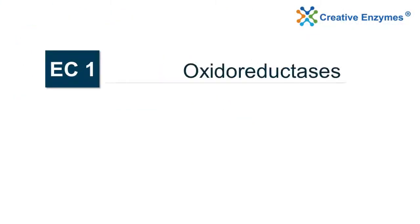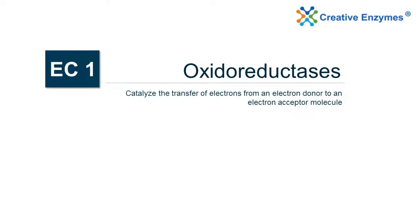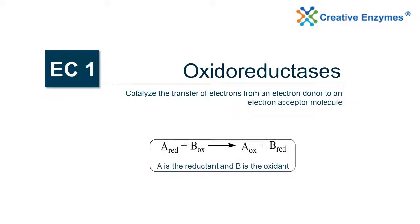EC1 — Oxidoreductases. Oxidoreductases catalyze the transfer of electrons from an electron donor to an electron acceptor molecule. In the reaction shown below, A is the reductant and B is the oxidant.